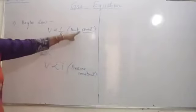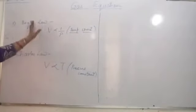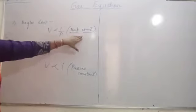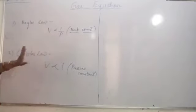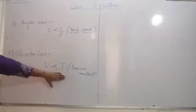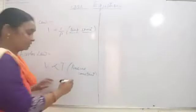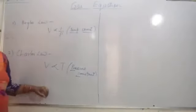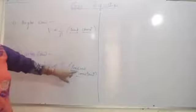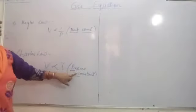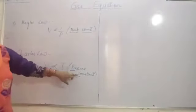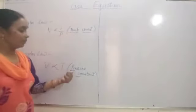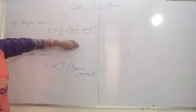In Boyle's law, volume and pressure are shown in relationship with temperature remaining constant. In Charles' law, volume and temperature relationship is shown with pressure remaining constant. Now suppose you have a condition in which both parameters — temperature and pressure — are simultaneously changing.